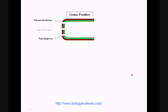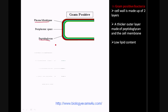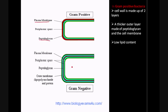Now let us have a look into the details of cell wall composition of Gram positive and Gram negative bacteria. In the case of Gram positive bacteria, the cell wall is made up of two layers: an outer layer of peptidoglycan membrane, which is very thick, followed by a cell membrane. The lipid content is very low.